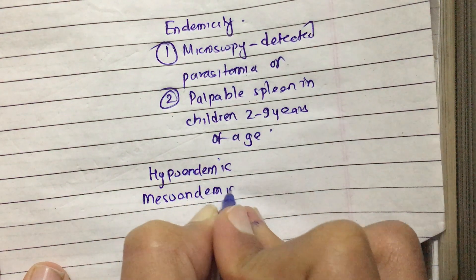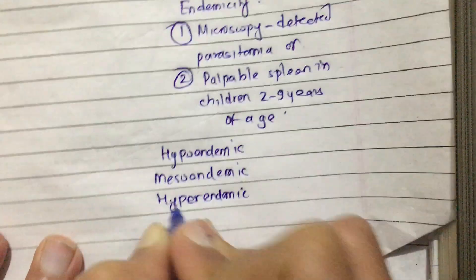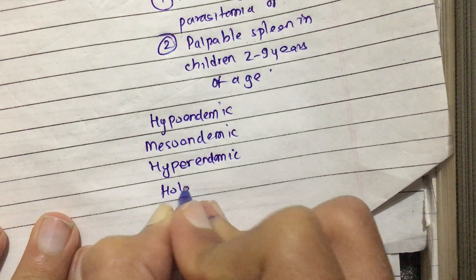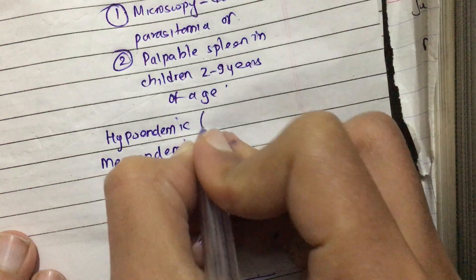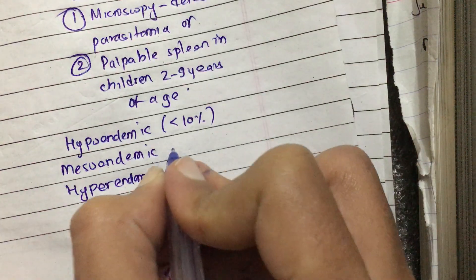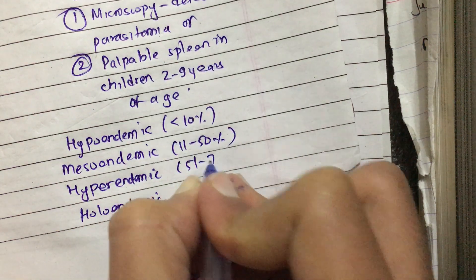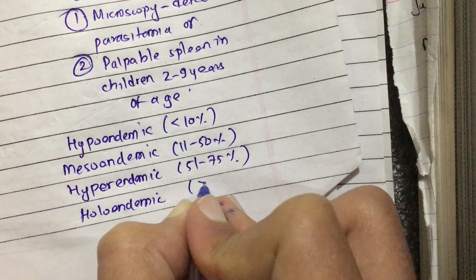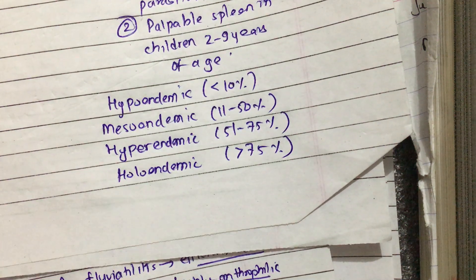The four categories are: hypo-endemic areas, hyper-endemic areas, and holo-endemic areas. Hypo-endemic means less than 10%, meso-endemic means 11 to 50%, hyper-endemic means 51 to 75%, whereas holo-endemic means greater than 75%.